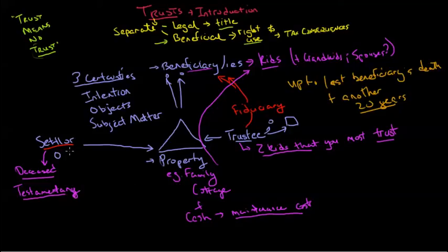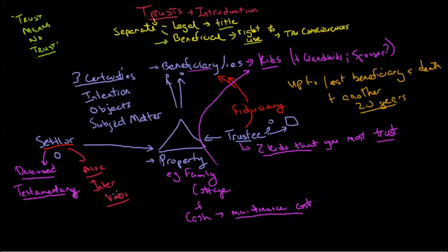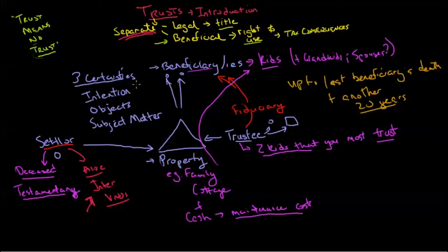One more thing: if my settler is alive when this trust is settled, we're going to have what we call an inter vivos trust. That just means the settler is alive. Even if the settler sets up a trust today and dies a year later, the trust still retains the character of an inter vivos trust — it was established while the settler was alive. The biggest thing to consider is that a trust is a separation of legal and beneficial ownership. We'll look at taxation of trusts and trust law in more detail later. I hope that helps — enjoy your ongoing studies. Thank you very kindly.